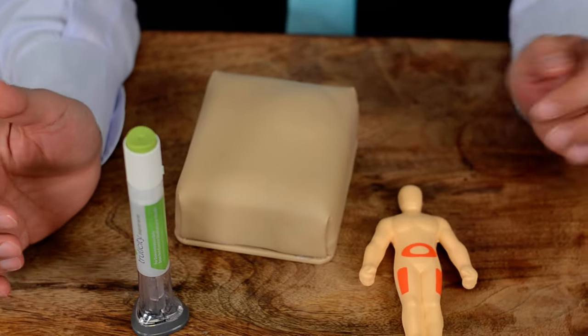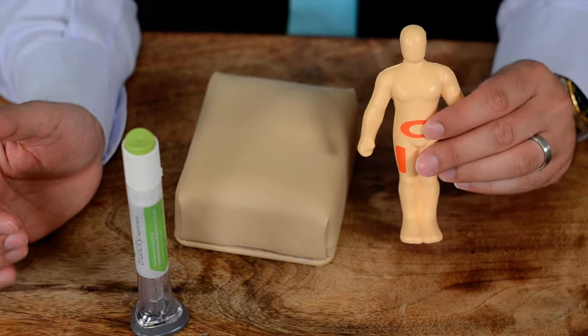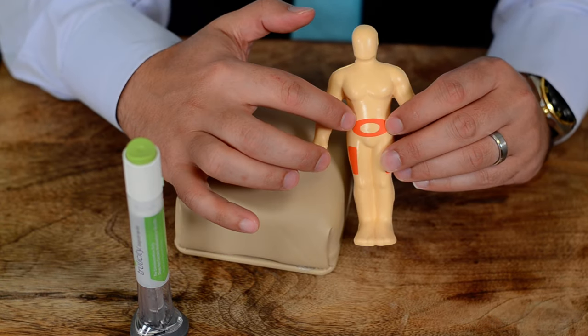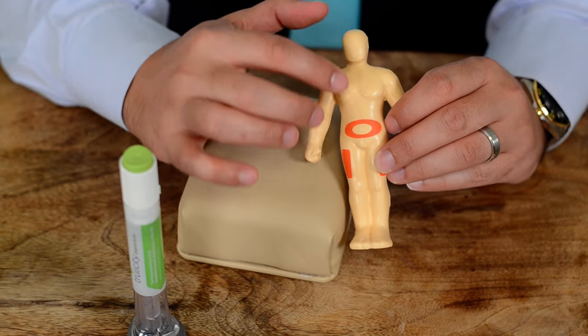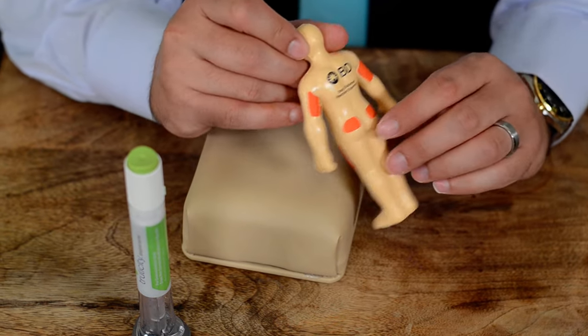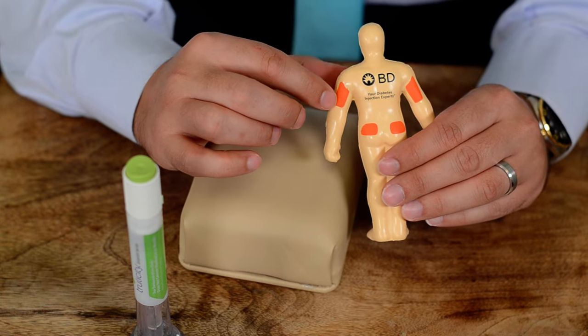Before we do that, let's show you where you can inject the Trulicity. Basically, you can inject at the upper thigh or in the abdomen. Make sure you do not inject close to the umbilical area, at least two inches away, upper buttocks, or the back of the arm.